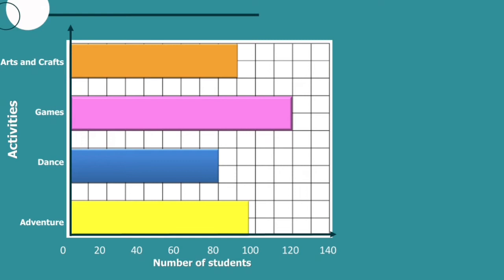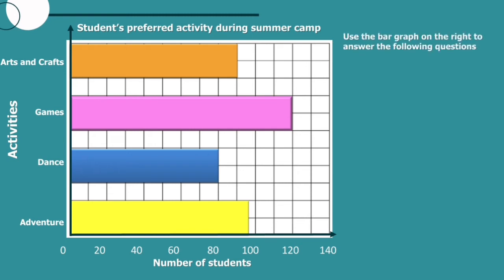As we said earlier, bar graphs can also be represented horizontally, and this is our example. The difference is our categories will be on the Y axis, and the frequency will be on the X axis. This graph is entitled 'Students' Preferred Activity During Summer Camp.' On the left side, we can see the activities during summer camp: arts and crafts, games, dance, and adventure. On the X axis is the number of students. Using this graph, we can answer the following questions.